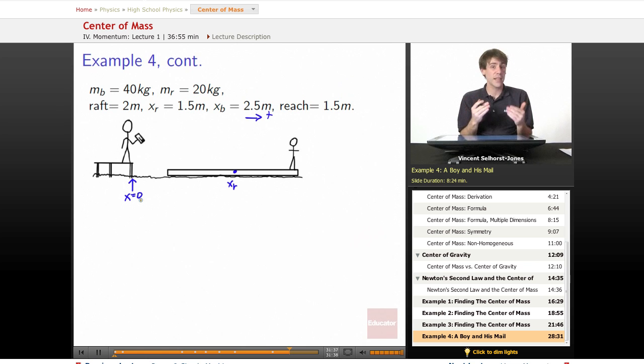The boy can reach out half a meter, so if the boy can get to X equals 1.5 or less, he's good. He can get his mail without having to row. Great. If he can't, he has to ship out the oars and actually move the boat or swim over or something.